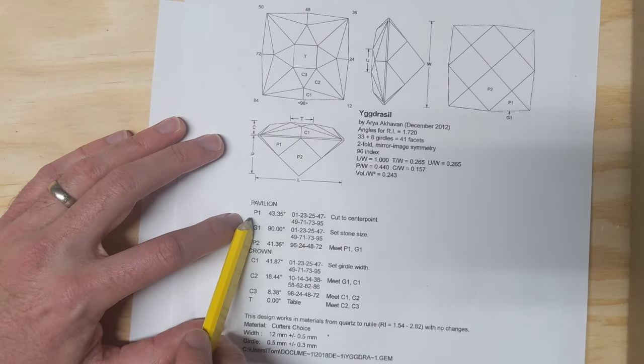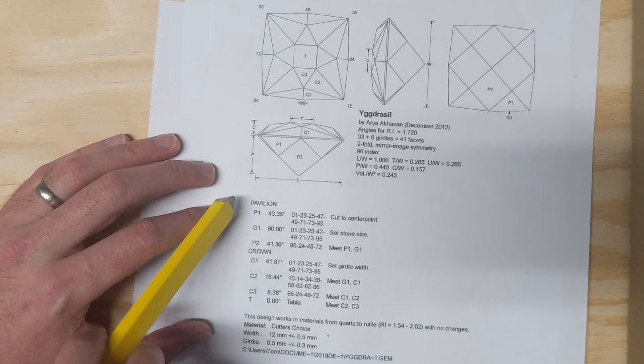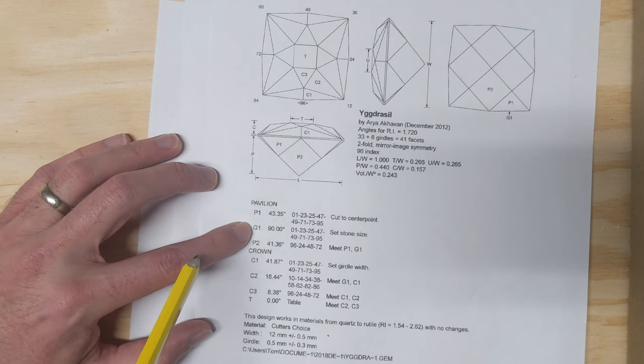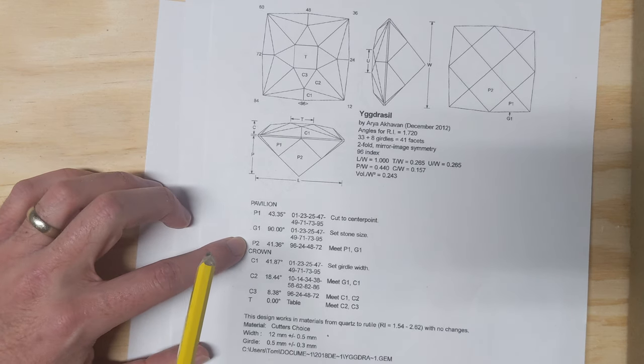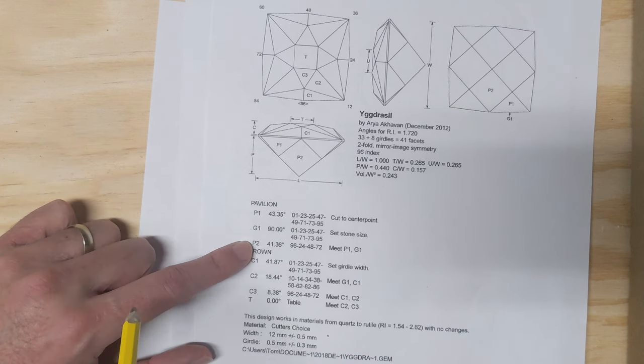We have the pavilion, and then P1 is pavilion 1. G1 is girdle 1, then P2 is pavilion 2. These are listed in order of recommended ways to, or recommended order to cut it.